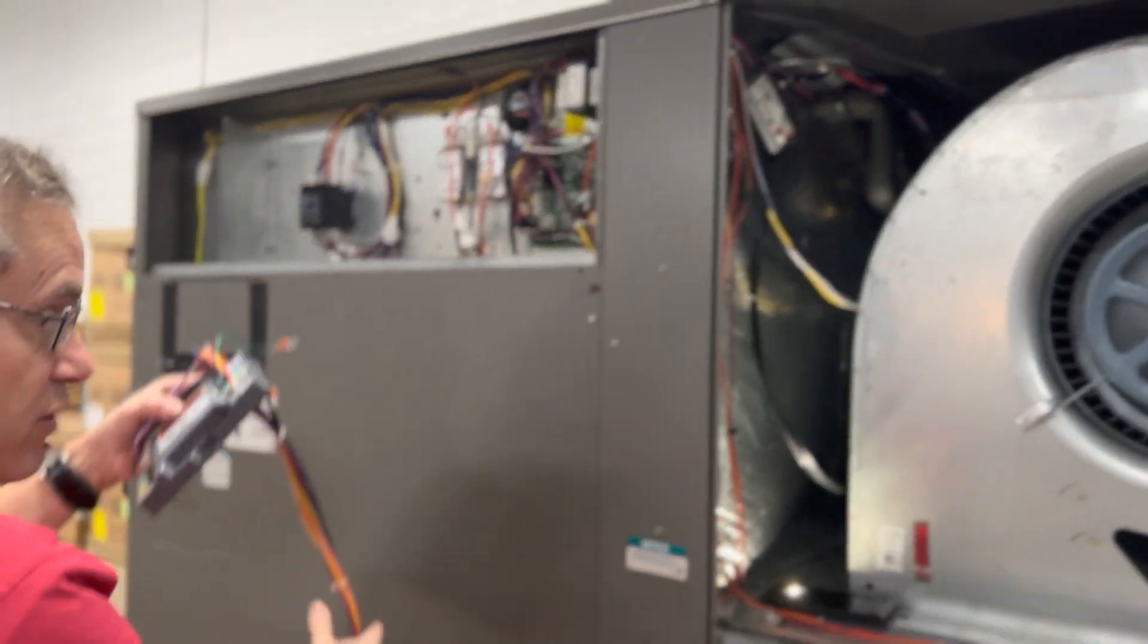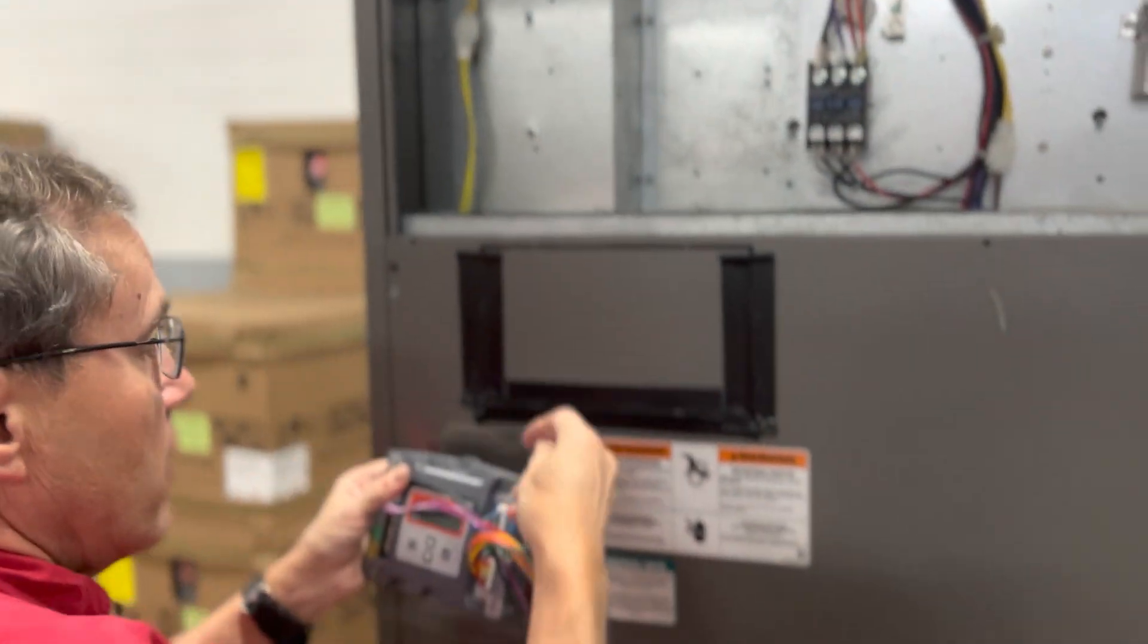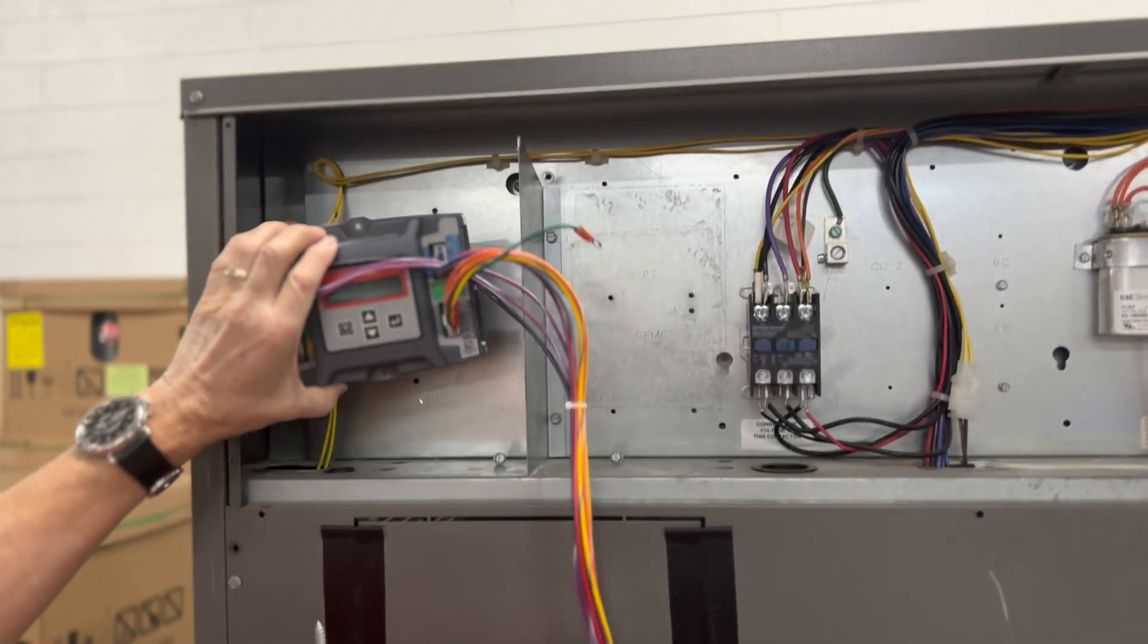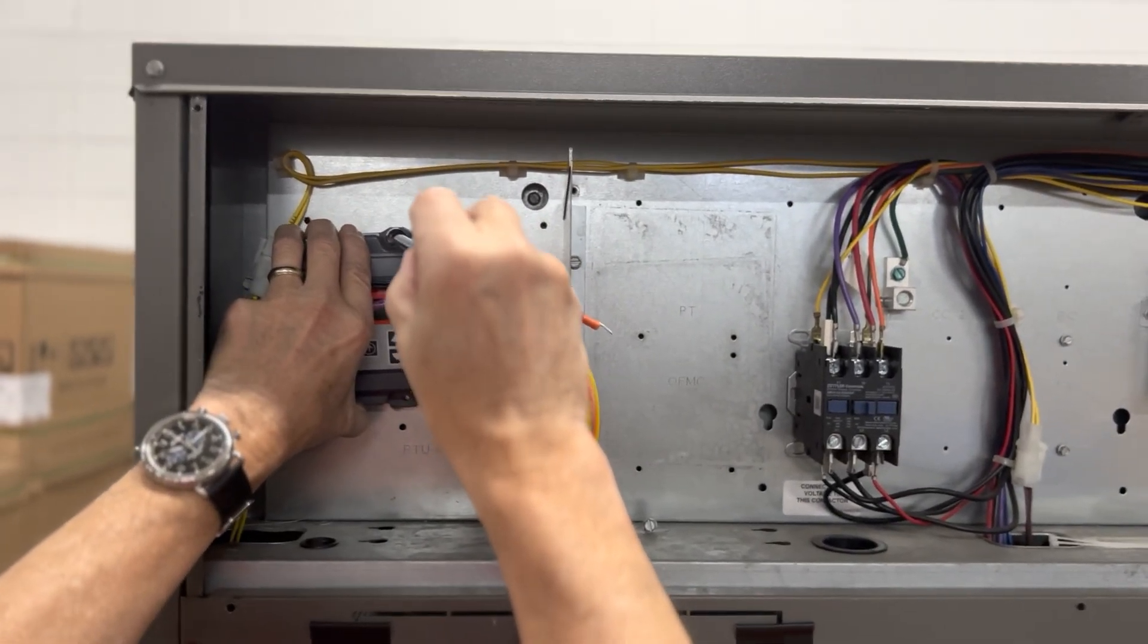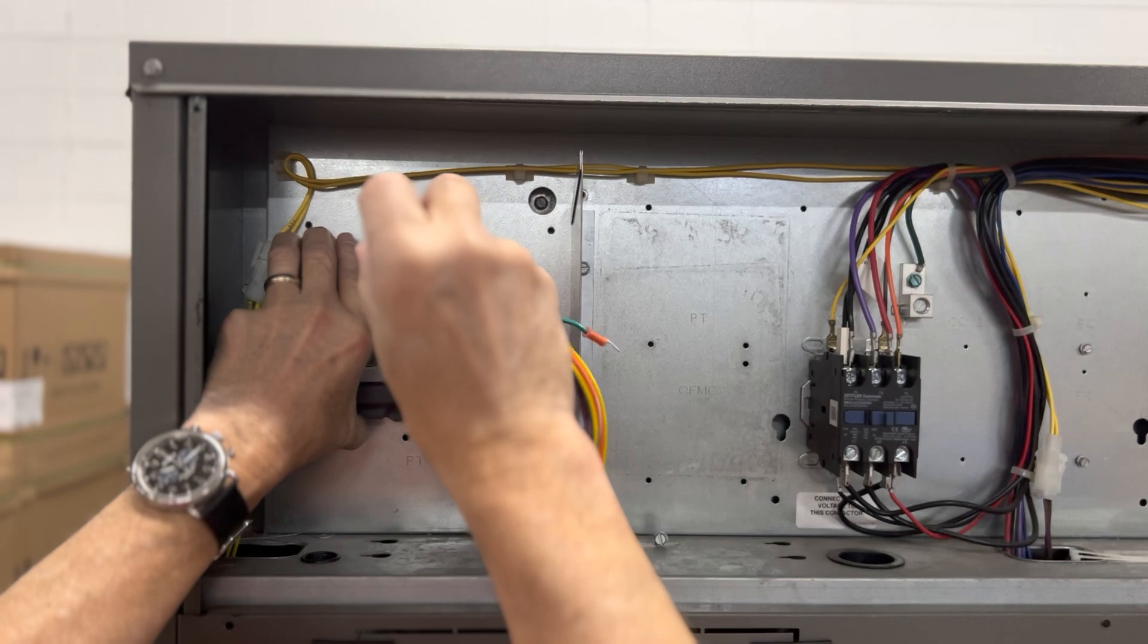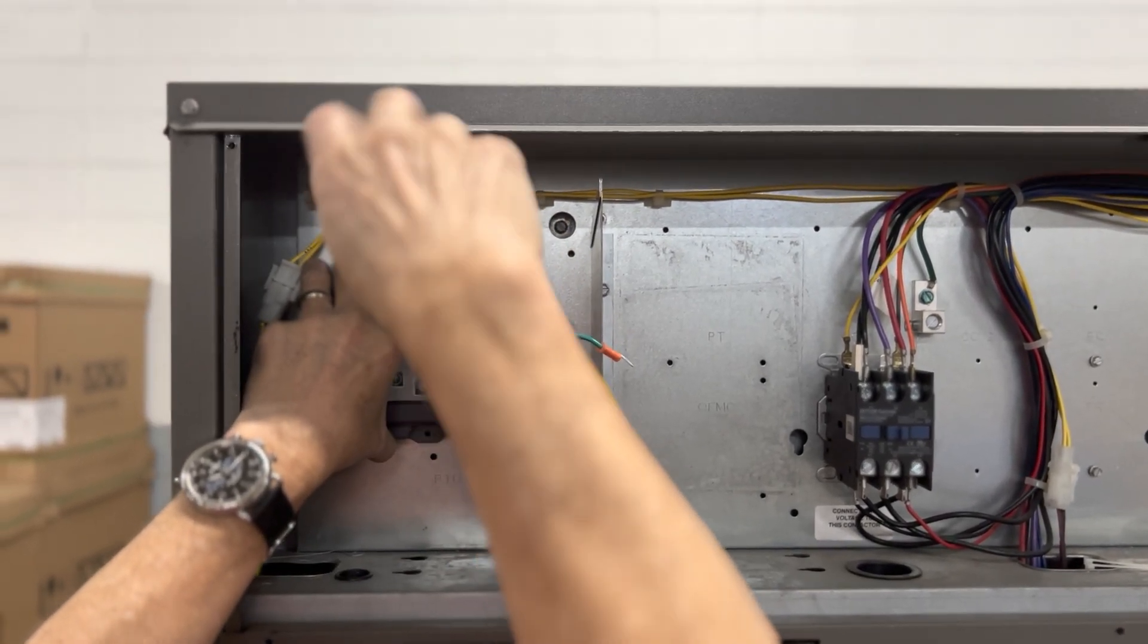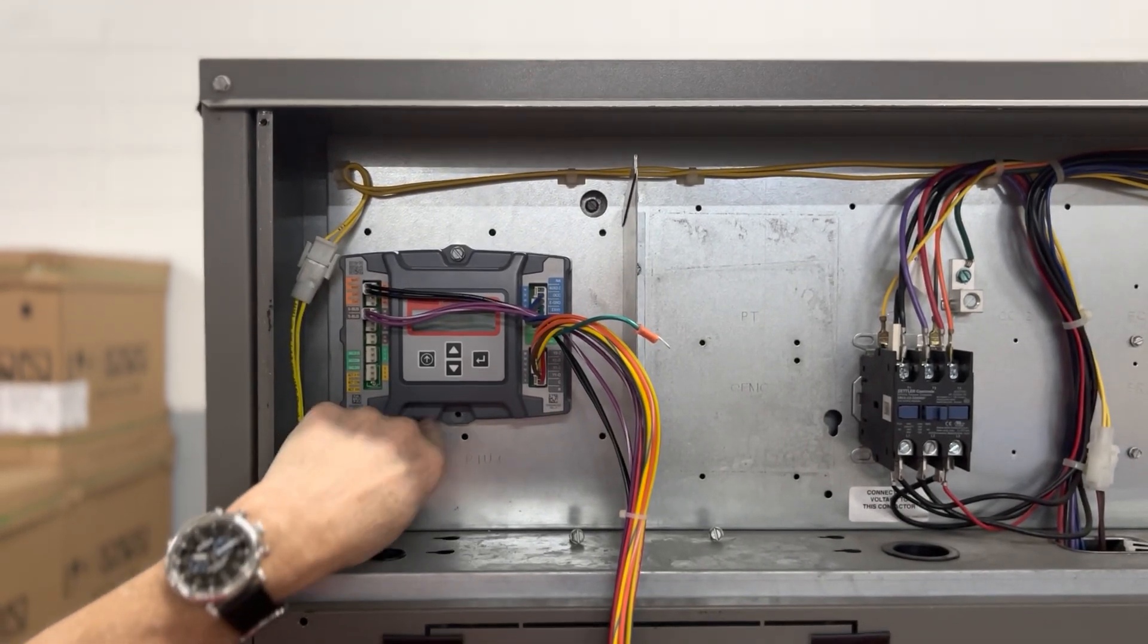Step three is going to be take the control, which you notice has all the wires on it. It does come out of the bag with the harness attached. And we are going to mount the unit controller right here. So we're going to put a screw right there. There is another screw that goes in the bottom to hold it in place.